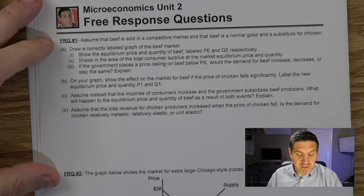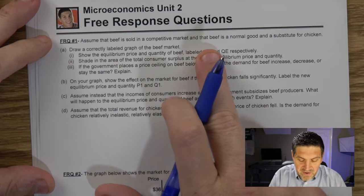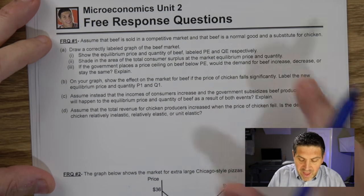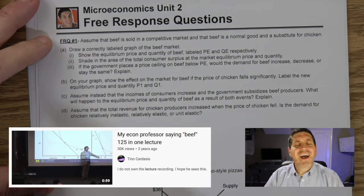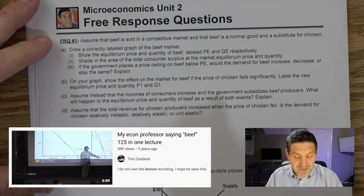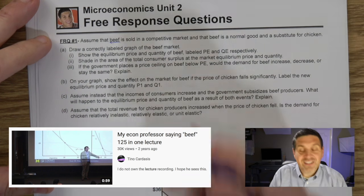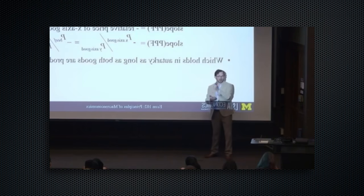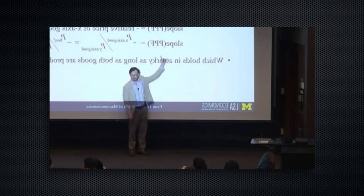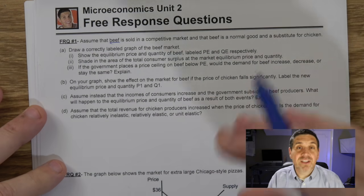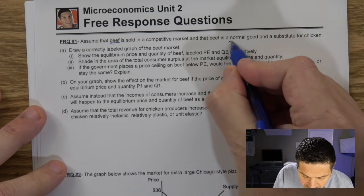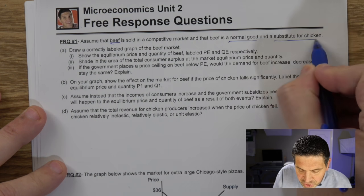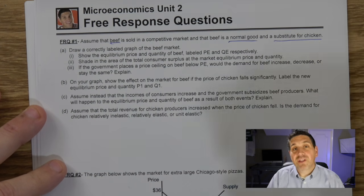Unit two, free response number one. It says: assume that beef is sold in a competitive market and that beef is a normal good and a substitute for chicken. That's why I chose beef — there's a funny YouTube video of an econ professor saying 'beef' a thousand times. Anyway, it's a competitive market so we're looking at supply and demand, and beef is a normal good and a substitute for chicken. We're going to use that information later in the free response.